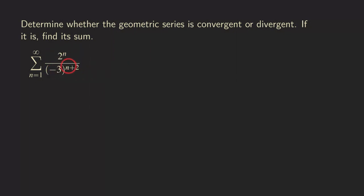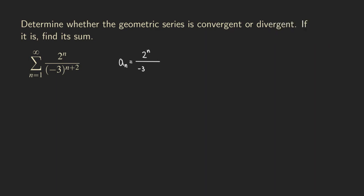First, we are going to claim that this is a_sub_n. So we are going to write it as a_sub_n, and that would be equal to 2 to the n. So we are just claiming that that expression is the same expression that we have in the series, so we have n plus 2. What we are going to do is use rules of exponents to start manipulating this expression.